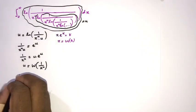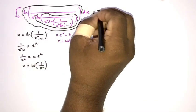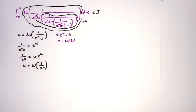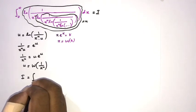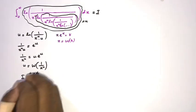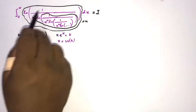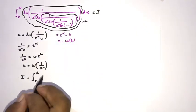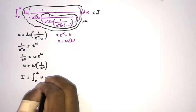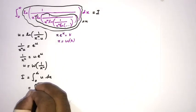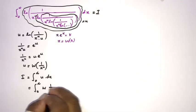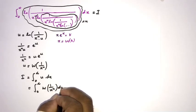Now our integral — I am going to call this i. So we can write i is equal to the integral from 0 to infinity of u dx, and we know u is equal to W of 1 over x to the n, so i equals the integral from 0 to infinity of W(1/xⁿ) dx.